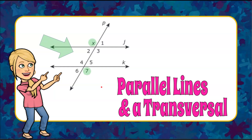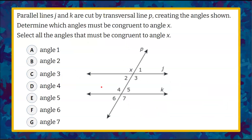Here's our question today. We're given parallel lines J and K that are cut by transversal line P, creating the angle shown. Here's our diagram.